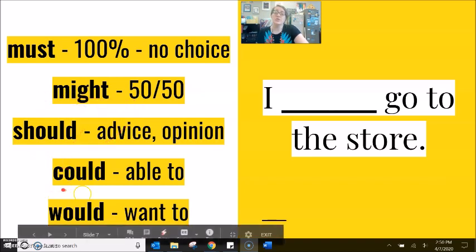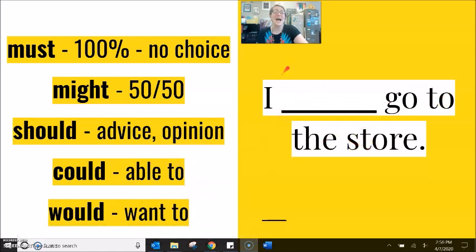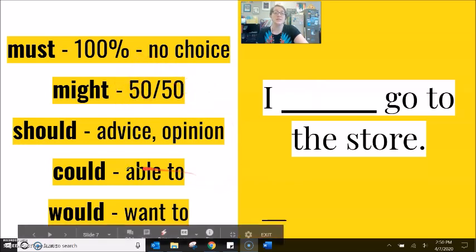Might and could are very similar. However, could does not have this equal feeling of 50-50. Could has the meaning of able to. I could go to the store means I am able to go. I have a car. I have money. I have time. I am able to go. I might go has a stronger feeling about the percentage, the possibility compared to the simple ability.